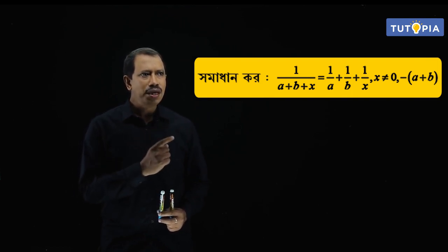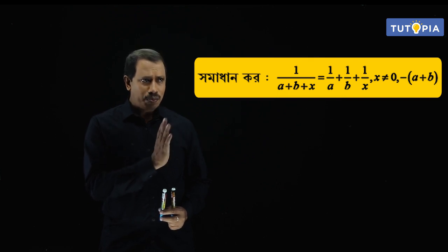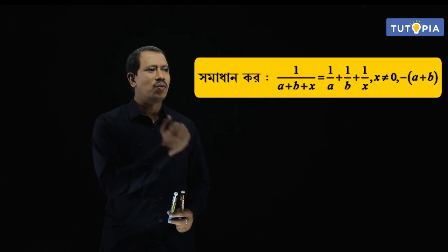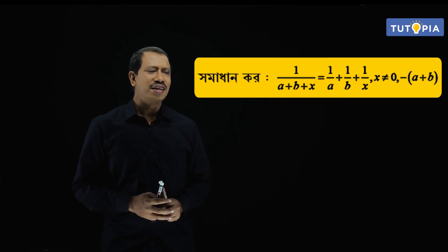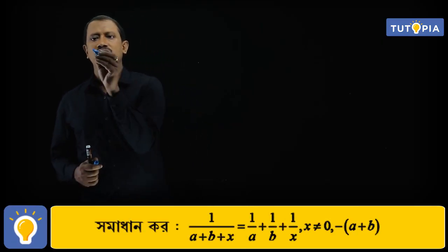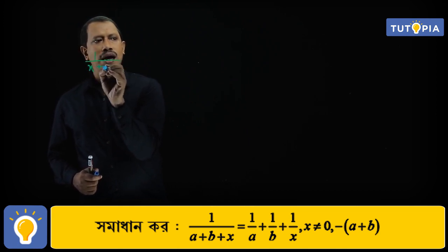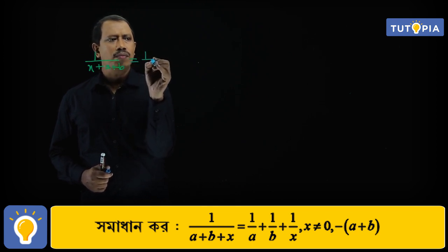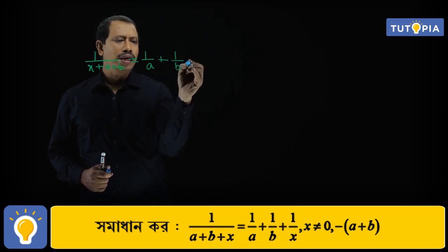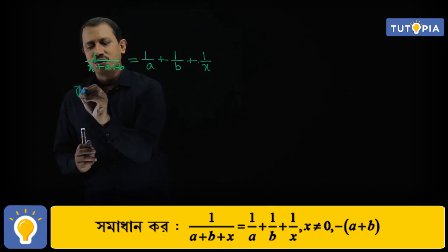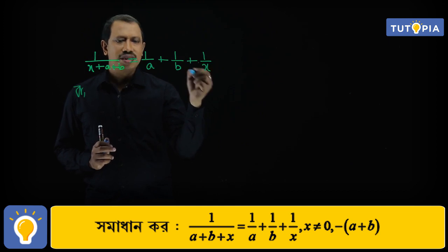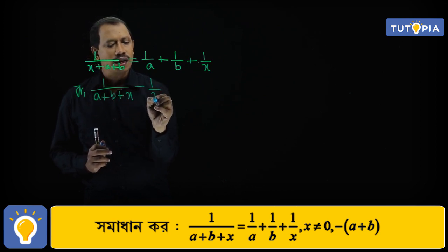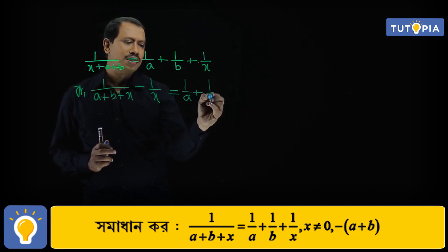The equation given is: 1 by (a plus b plus x) equals 1 by a plus 1 by b plus 1 by x. Rearranging, we get: 1 by (a plus b plus x) minus 1 by x equals 1 by a plus 1 by b.